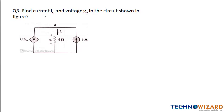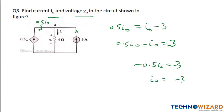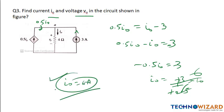Question 3, based on KCL: Find the current I0 and voltage V0 in the circuit. Here 0.5I0 is flowing in the same direction as I0, but 3A is coming in the opposite direction. Applying KCL: 0.5I0 minus I0 equals minus 3, so minus 0.5I0 equals minus 3, therefore I0 equals 6 amperes.